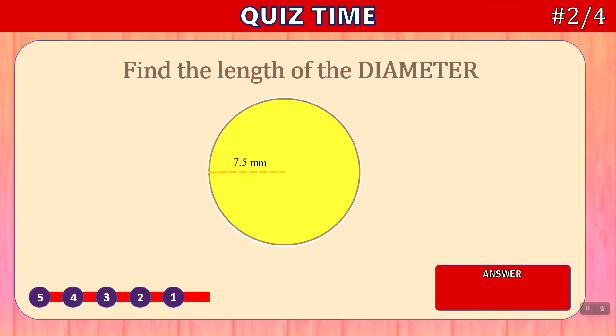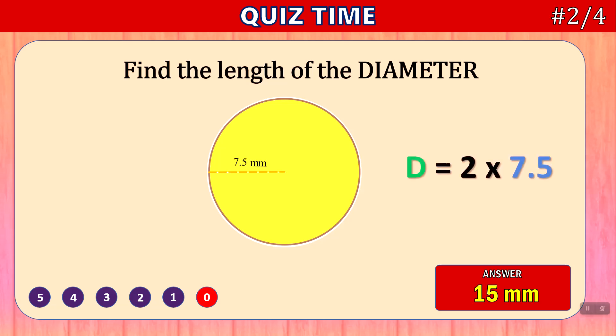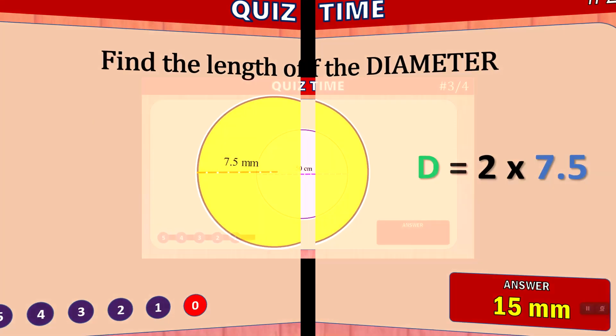Number 2 — find the length of the diameter. Time's up. The answer is 15 millimeters. The formula is D equals 2 times R; in this case, 7.5 is the radius, and 2 times 7.5 is 15.